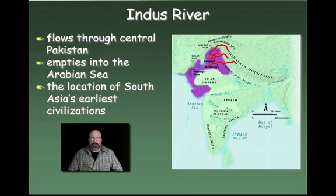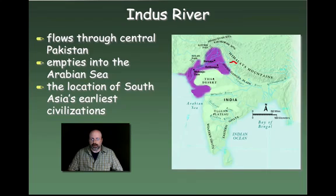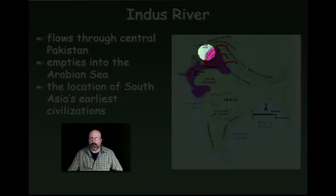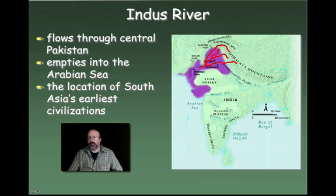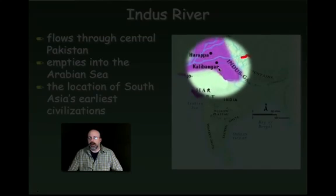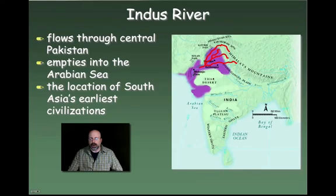Let's take a look at the Indus River. The Indus River flows through what we would call Pakistan — right through the center of Pakistan — and empties into the Arabian Sea. It's the location of South Asia's earliest civilization. It starts in the Himalayas and flows right down the middle of modern Pakistan. In the purple area on the map, this is what we call the Indus Valley Civilization, with several cities including Harappa, Kalibangan, and Mohenjo-daro, which we'll look at more closely later in the course.